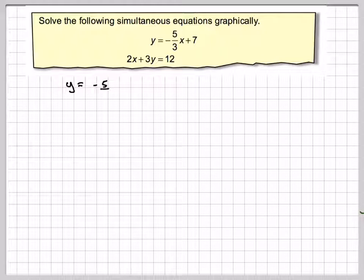So if we just write out the two equations first, it's y is equal to minus 5 over 3x plus 7, and 2x plus 3y is equal to 12, and go directly to our GDC.